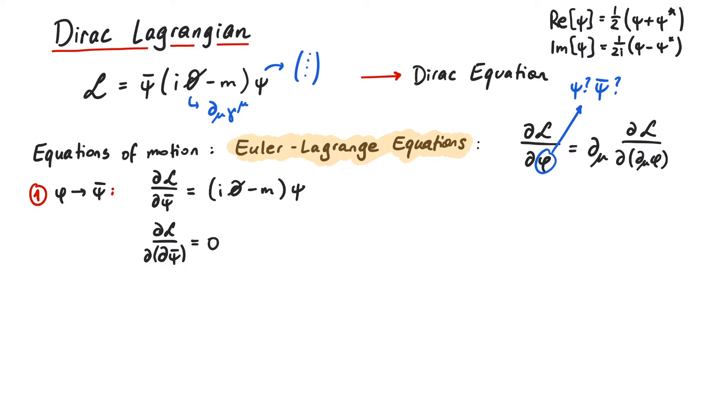There's just no d psi bar anywhere in the Lagrangian. There we have it. This is the equation of motion for psi. These equations describe how psi behaves and moves. Note that we calculated the Euler-Lagrange equations for psi bar, but ended up with the EOM for psi.